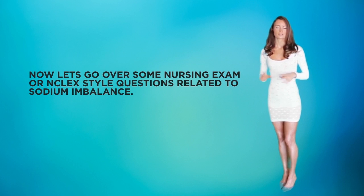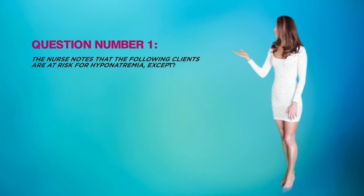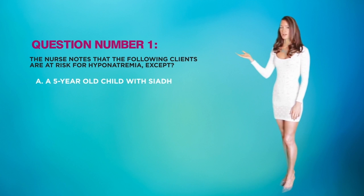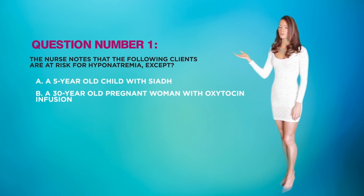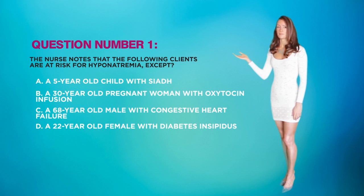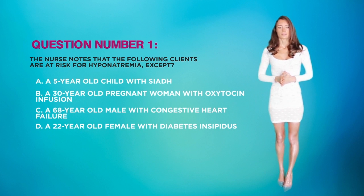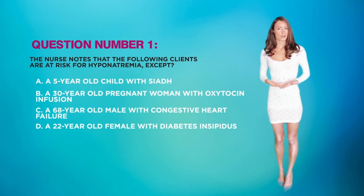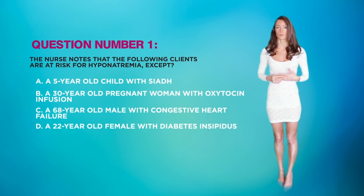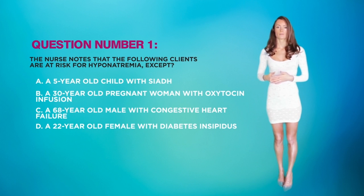Now let's look at some NCLEX-style questions. Question one: The nurse notes that the following clients are at risk for hyponatremia, EXCEPT: A) a five-year-old child with SIADH, B) a 30-year-old pregnant woman with an oxytocin infusion, C) a 68-year-old male with CHF, and D) a 22-year-old female with diabetes insipidus. Patients with SIADH are at risk for hyponatremia because the pituitary gland releases too much antidiuretic hormone, causing the body to retain water, which dilutes serum sodium levels dangerously.